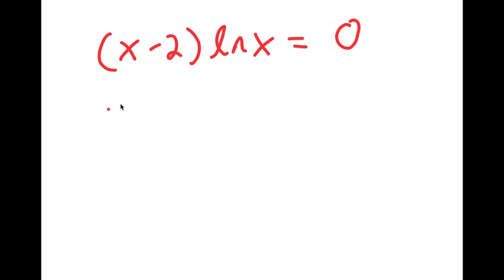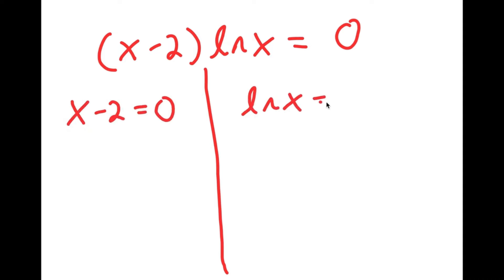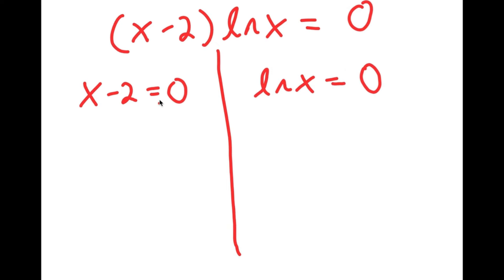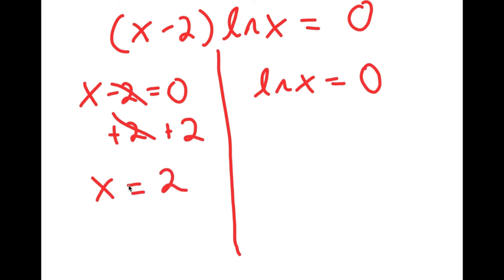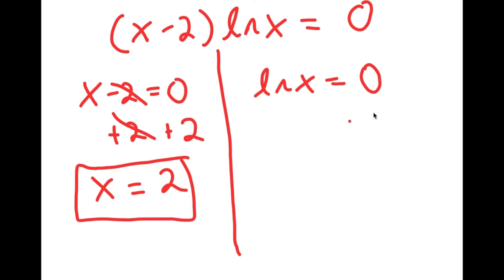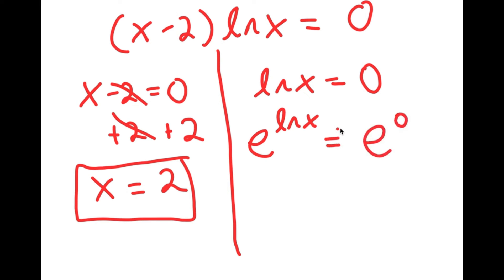This gives me two equations: x minus 2 equals 0, and ln x is equal to 0. For x minus 2 equals 0, all I have to do is add 2 on both sides and I get x is equal to 2. For ln x equals 0, I take e to the power of both sides. I get e to the power of ln x is equal to e to the power of 0. Since e and ln x cancel out, I'm left with x is equal to e to the power of 0, which is 1.